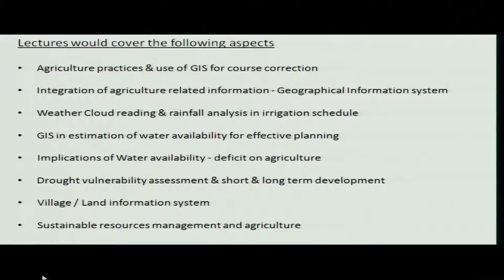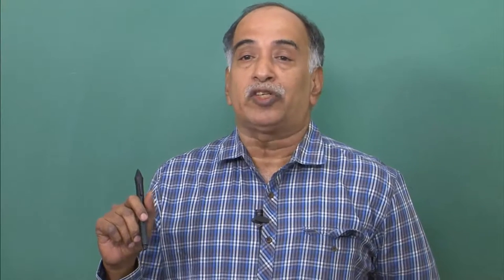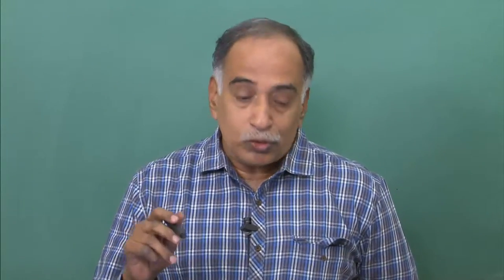We also address whether adequate water is available. We have included GIS applications in water availability, water demand, and the implications of water deficit on agriculture. Water deficit leads to drought vulnerability, and that assessment needs to be done with long-term development projects rather than crisis management. We should not forget the village and land information system, which is the backbone of agriculture practices, and we should pursue sustainable resource management in agriculture.